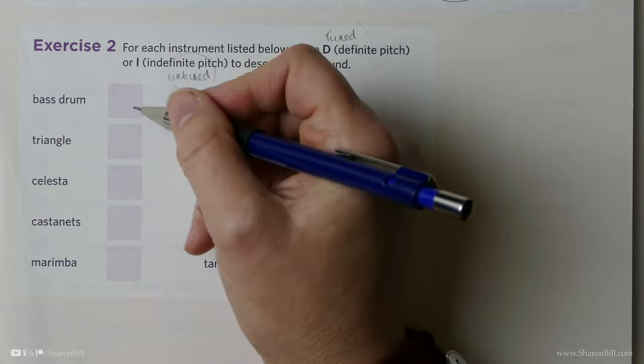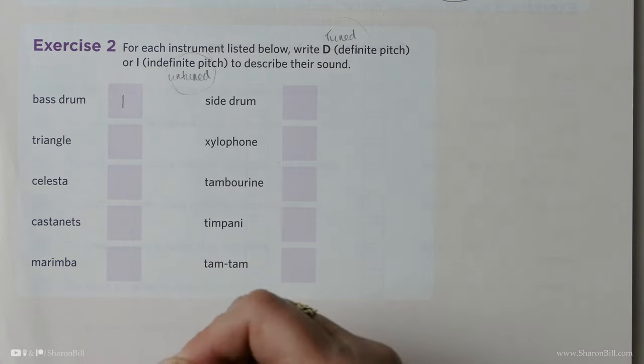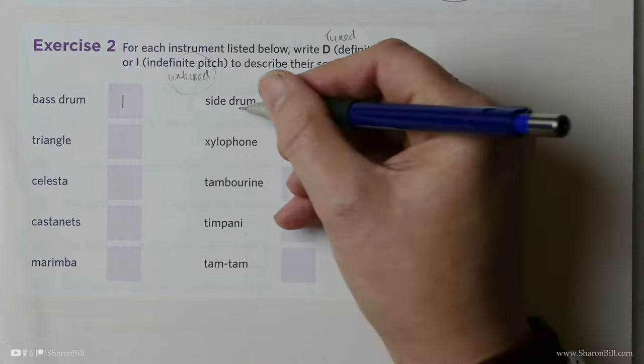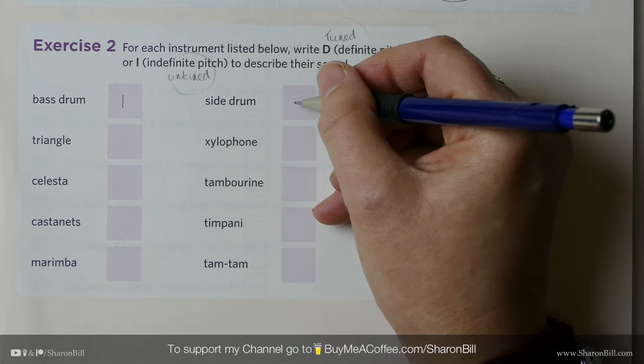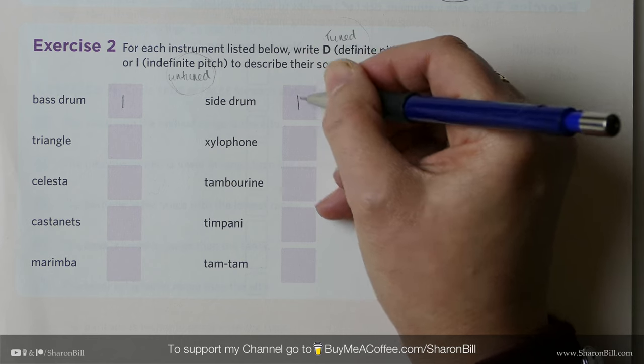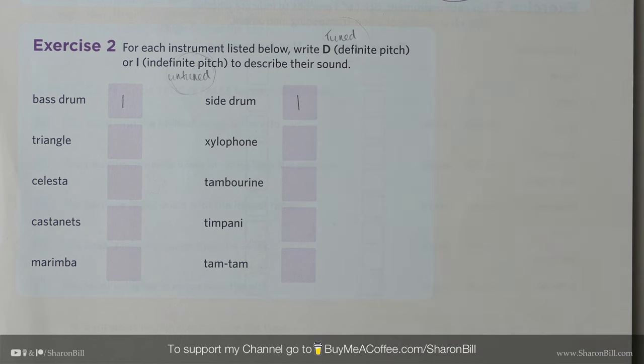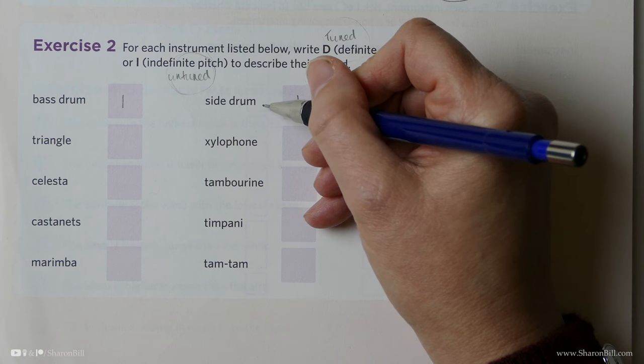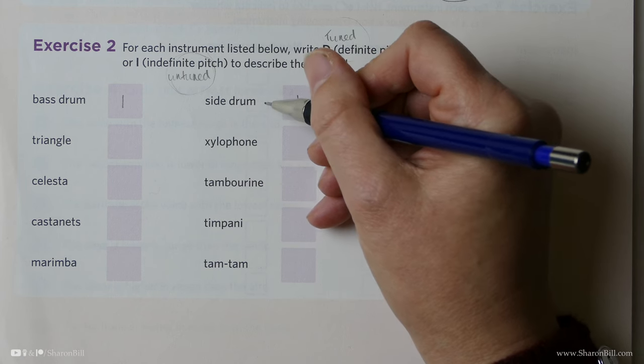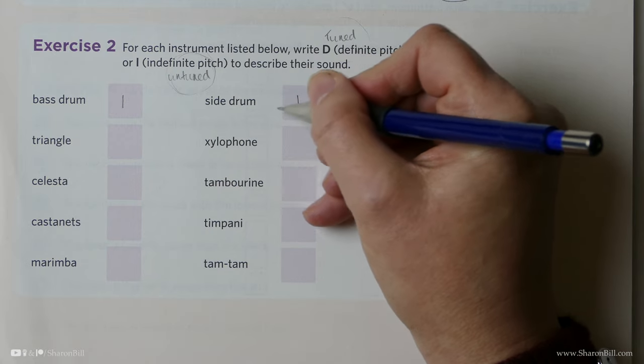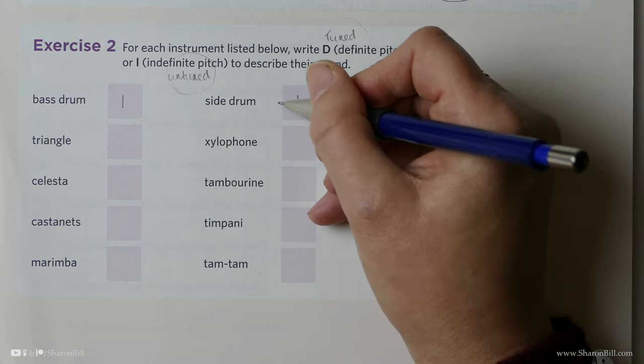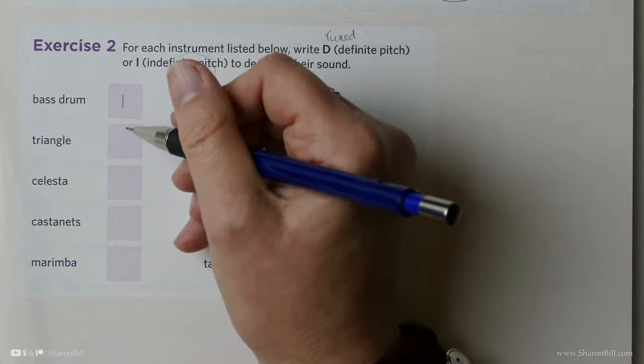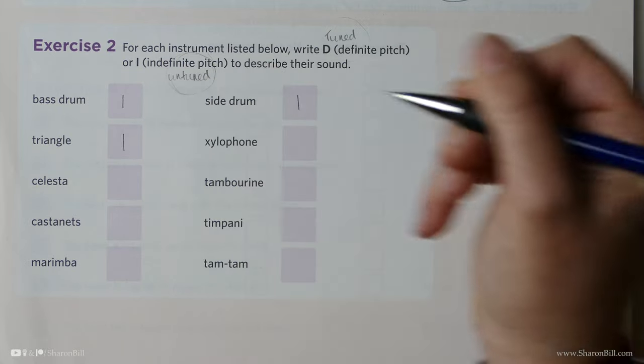The bass drum. That is indefinite pitch, because we just give it a bang and we get a beat. The side drum also is indefinite pitch, like a snare as well. I think the snare is part of the drum kit. The side drum is an orchestral version, and I think it's the side drum that repeats over and over again when we hear Ravel's Bolero. The triangle just gives us a ting. We can't play a melody, so again, that is indefinite pitch.